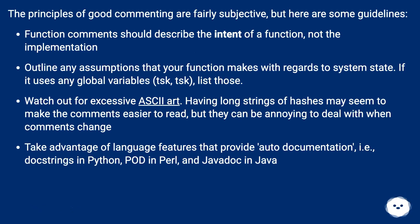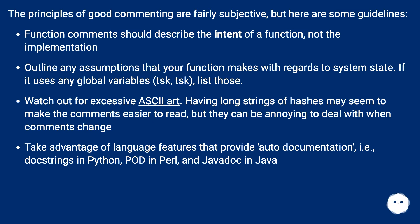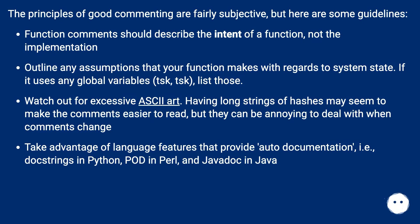The principles of good commenting are fairly subjective, but here are some guidelines. Function comments should describe the intent of a function, not the implementation. Outline any assumptions that your function makes with regards to system state. If it uses any global variables, list those. Watch out for excessive ASCII art — having long strings of hashes may seem to make comments easier to read, but they can be annoying to deal with when comments change. Take advantage of language features that provide auto documentation: doc strings in Python, pod in Perl, and Javadoc in Java.